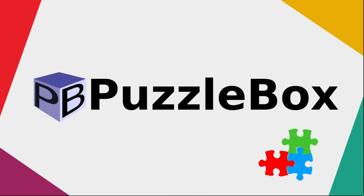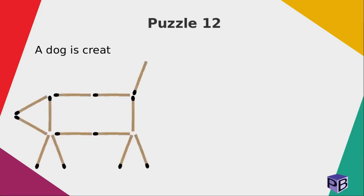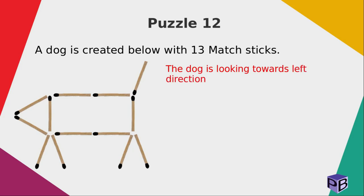Welcome solvers, welcome to Puzzle Box. I am back with a new puzzle. A dog is created below with 13 matchsticks. The dog is looking towards the left direction. Can you move two sticks so that the dog looks towards the right direction?